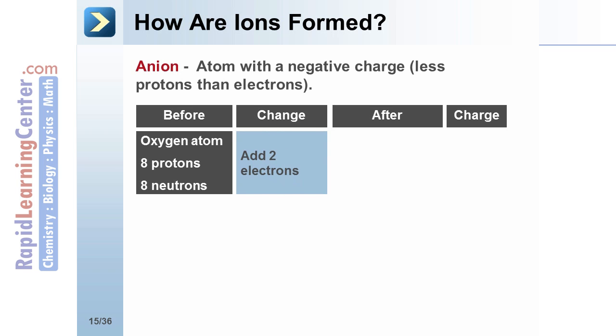If we add two electrons, it now has eight protons and ten electrons. The charge is now negative two.